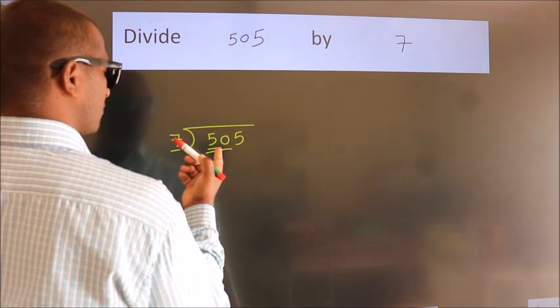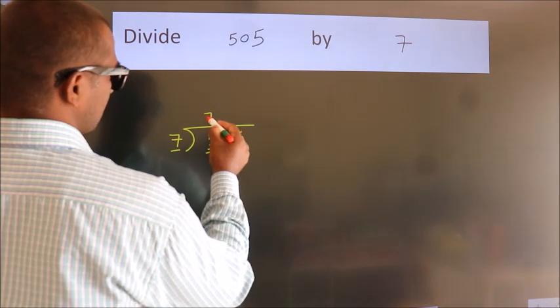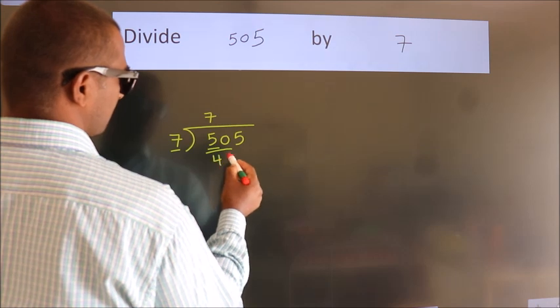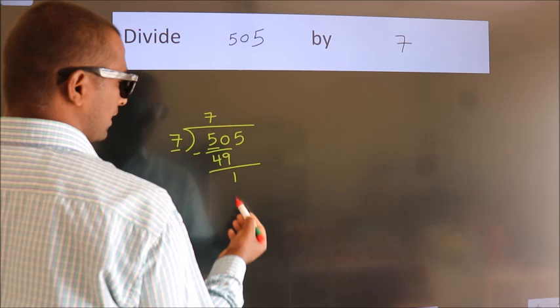A number close to 50 in the 7 table is 7 times 7, which is 49. Now we should subtract. We get 1.